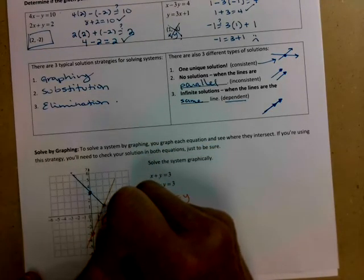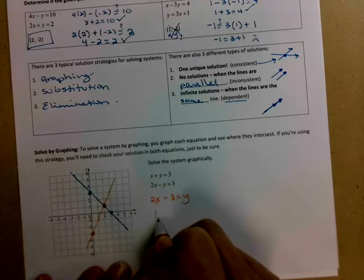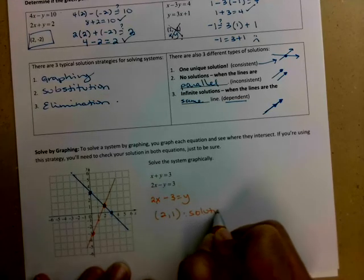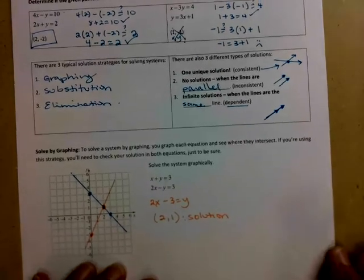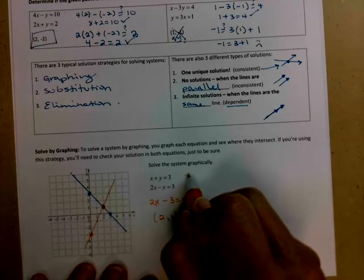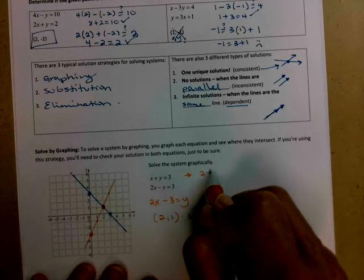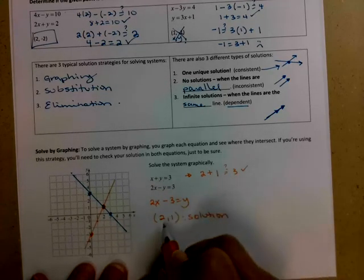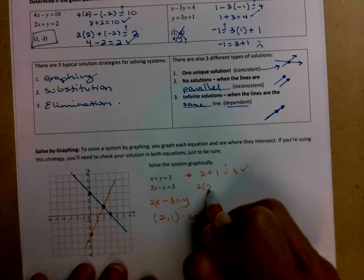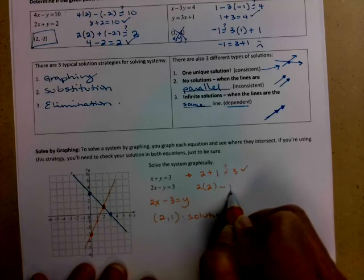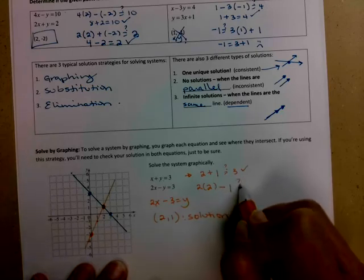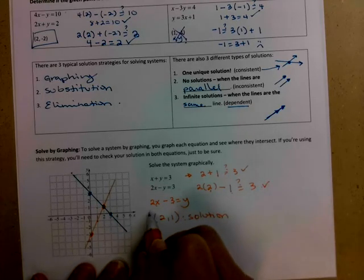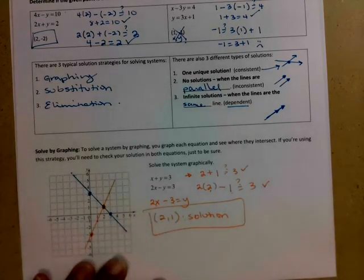So the one point that is true for both equations appears to be the point 2, 1. I think this is the solution, but like I said, we're going to go ahead and check just to make sure it makes both equations true. So checking the first equation, is 2 plus 1, x plus y, equal to 3? Yes, of course it is. And we'll check the second equation, is 2 times x, being played by 2, minus 1, the y-value, is that equal to 3? Let's see, 2 times 2 is 4, minus 1 is 3. It was good. So there is our solution.